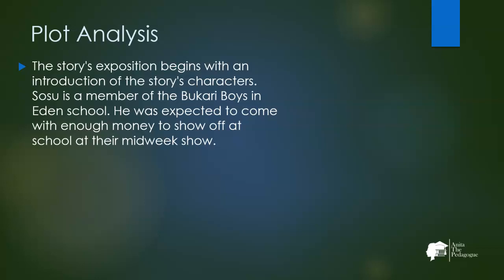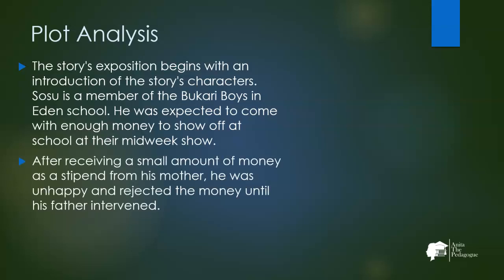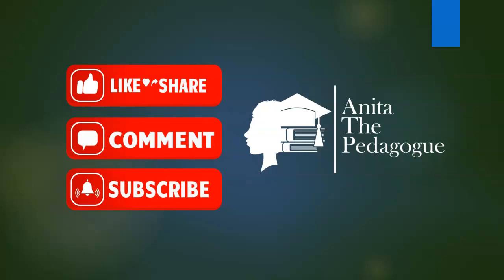The story begins with the exposition, where there is an introduction of the characters. Sosu is a member of the Bukhari Boys in Eden School. He was expected to come with enough money to show off at school for their midweek show. After receiving a small amount of money as a stipend from his mother, Sosu was very unhappy and rejected the money until his father intervened by scolding him.